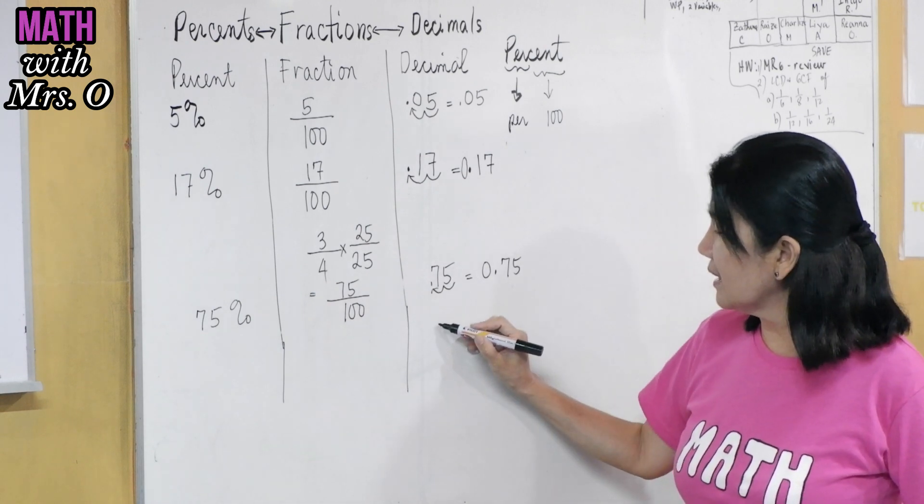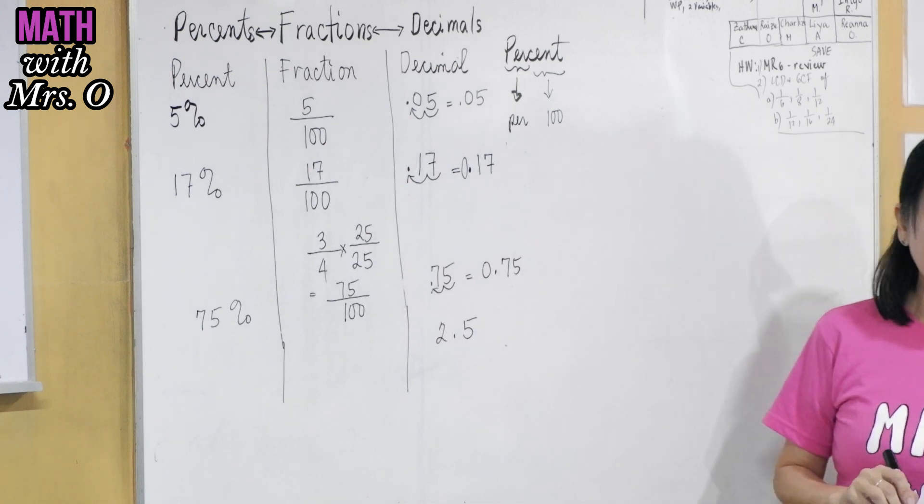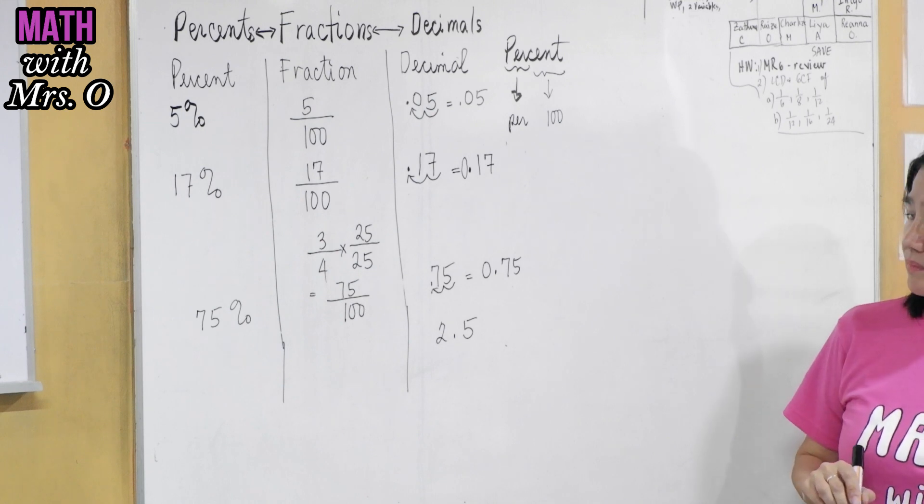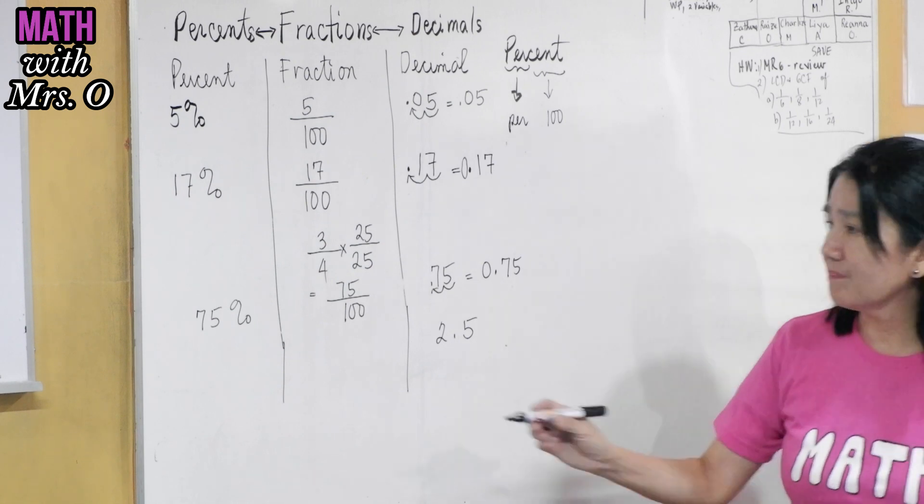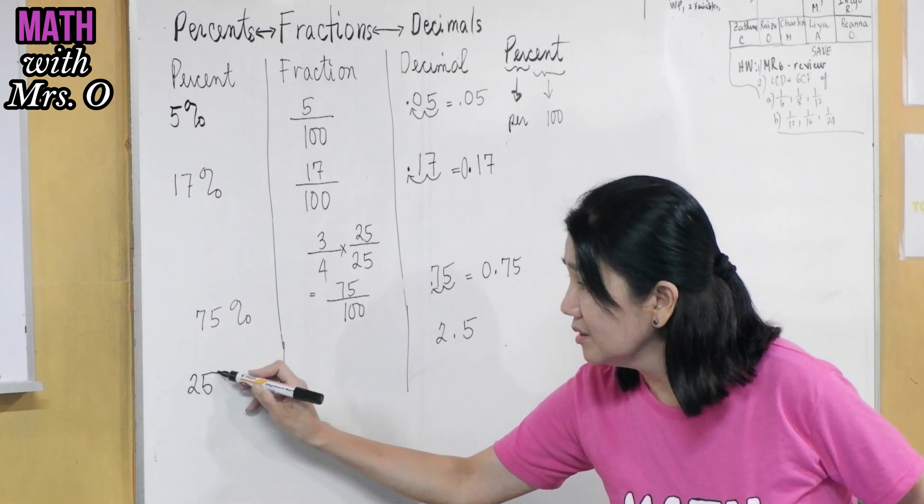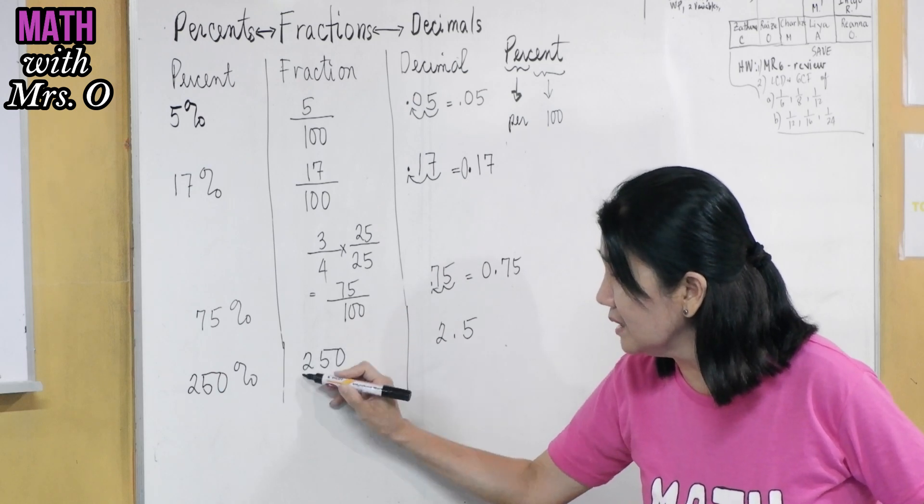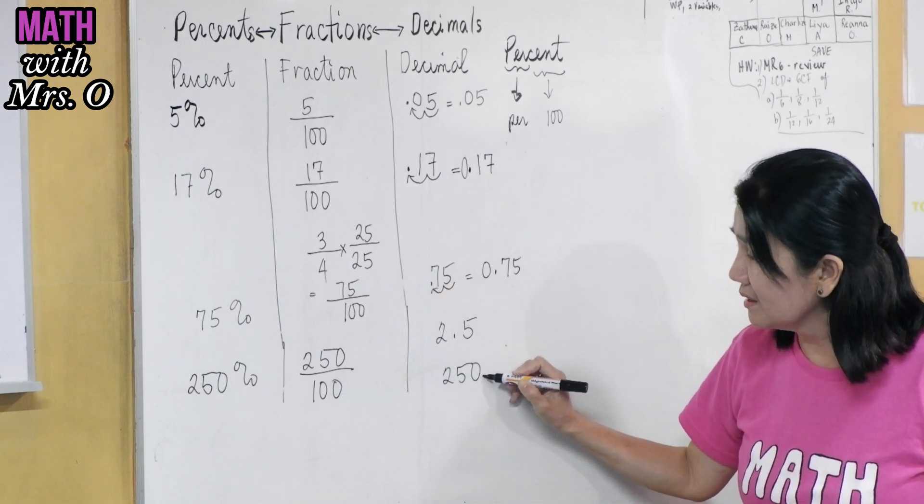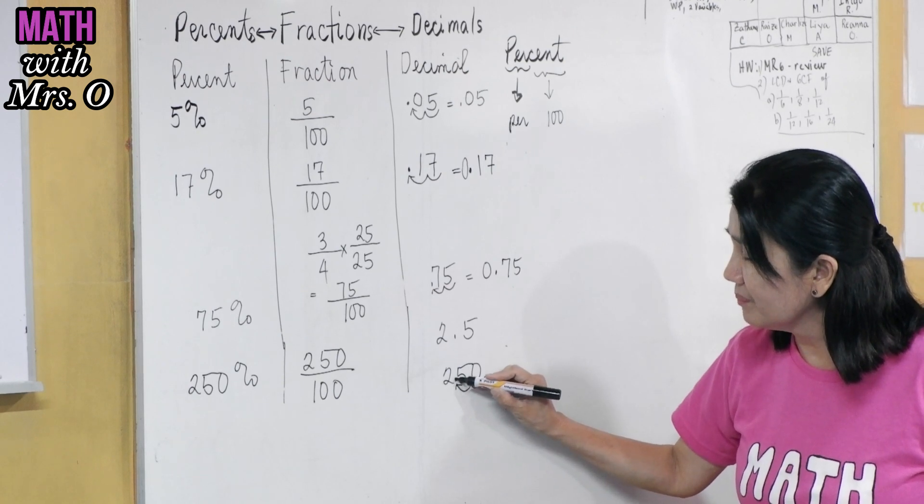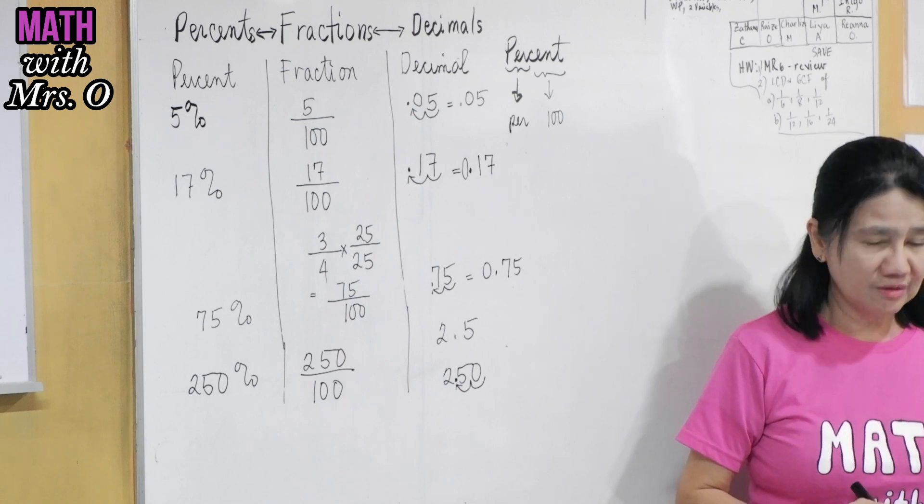Now, what if I have here a 2.5? Is she correct? 250 percent? Yes. So if we have here a 250 percent, this means this is 250/100. Is that equal to 250? Then move the decimal point two places to the left and you get a 2.5? Yes.